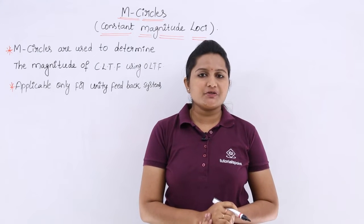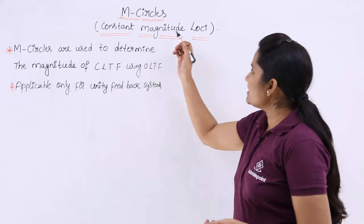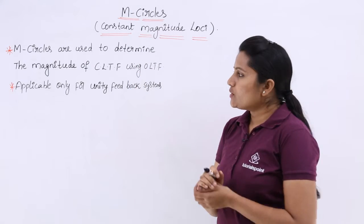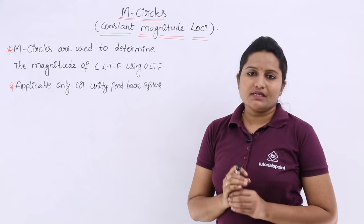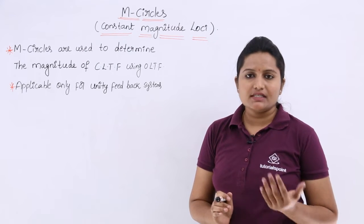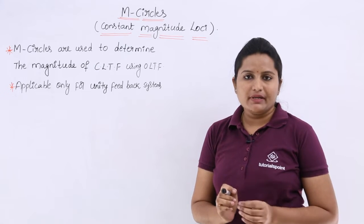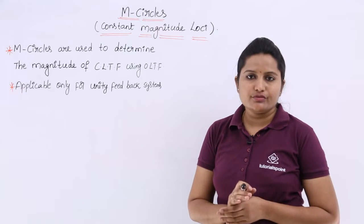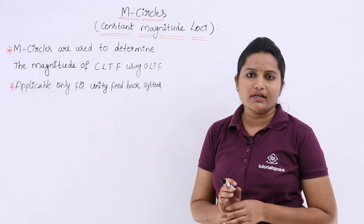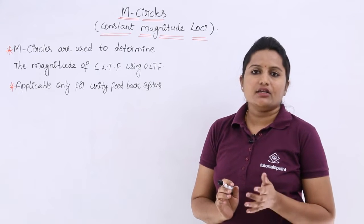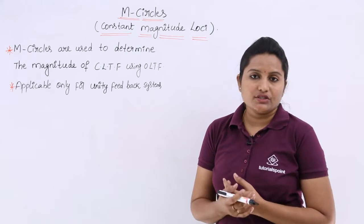In this video we are going to discuss M circles, or constant magnitude loci. M circles are used for stability analysis. As we discussed at the start of stability analysis, we use different plots like Bode plot, Polar plot, Nyquist plot, and methods like Routh array, M circles, N circles, and Nichols chart.